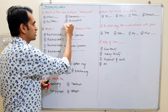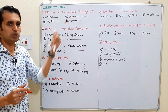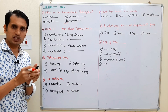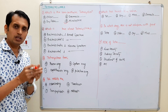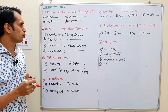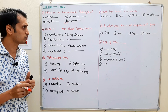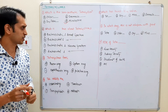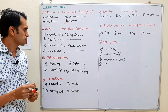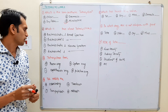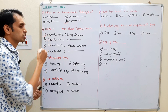Question 2: Which is true about tetracycline? Option A: bacteriostatic and broad spectrum, Option B: bactericidal and broad spectrum, Option C: bacteriostatic and narrow spectrum, Option D: bactericidal and narrow spectrum. The answer is A — bacteriostatic and broad spectrum.